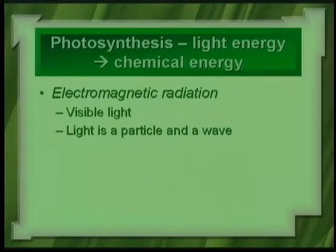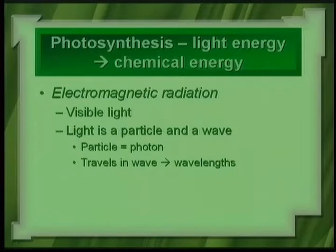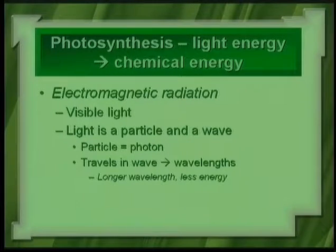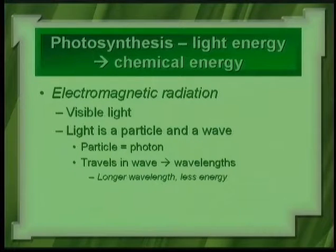Light behaves as a particle — it hits in discrete pieces called photons — and yet it also travels in waves, making wavelengths. Generally, the longer the wavelength of light, the less energy it has. On one side of the electromagnetic spectrum you have very long wavelengths such as radio waves; on the other side you have very high energy, short wavelengths such as gamma rays and X-rays.